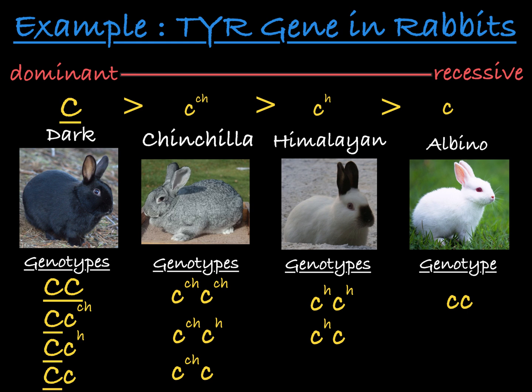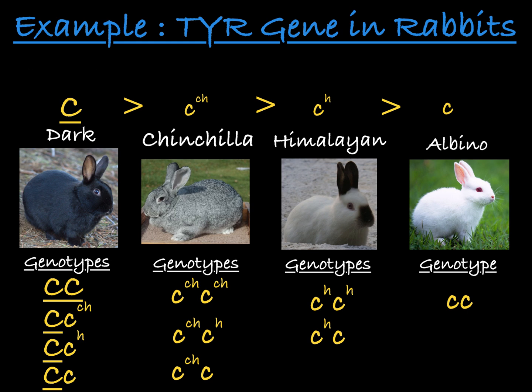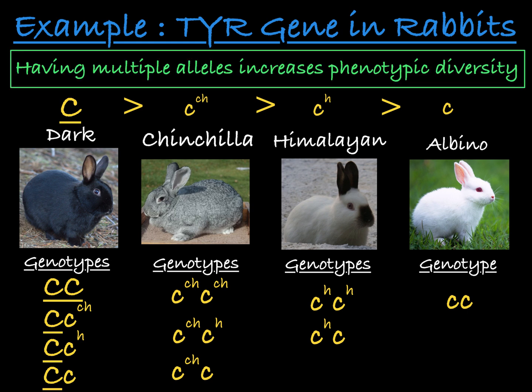As you can see, when there are more than two alleles of a gene, you can see more than two phenotypes associated with the gene. Additional alleles can increase phenotypic diversity.